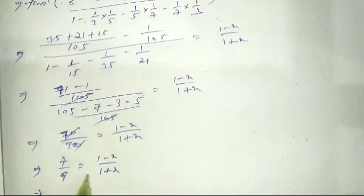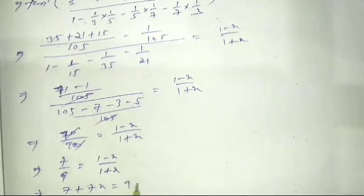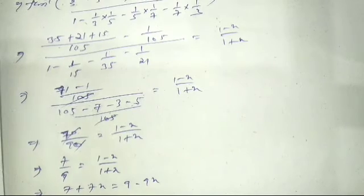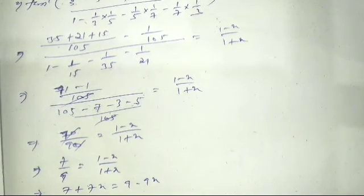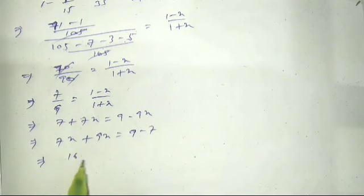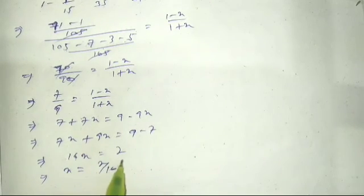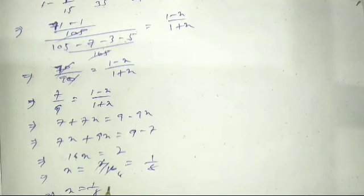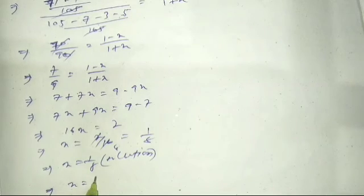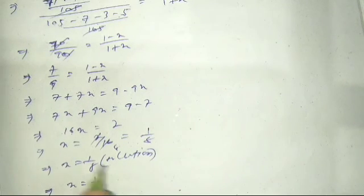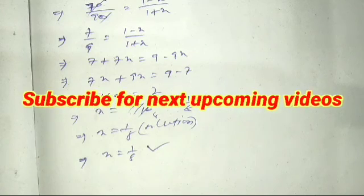Cross multiplying: 7(1 plus x) equals 9(1 minus x), so 7 plus 7x equals 9 minus 9x. Then 7x plus 9x equals 9 minus 7, giving 16x equals 2, so x equals 2/16 equals 1/8. Therefore x equals 1/8 is the solution, which satisfies the original equation.